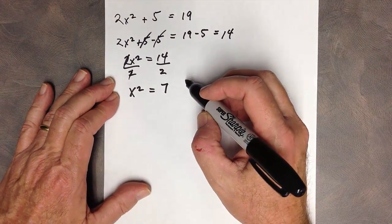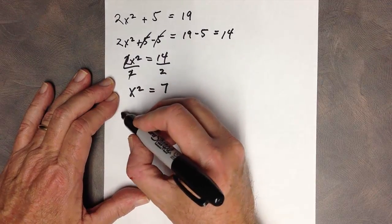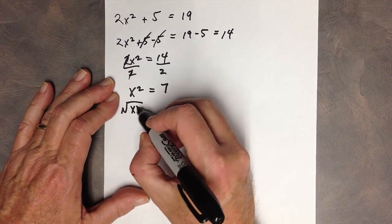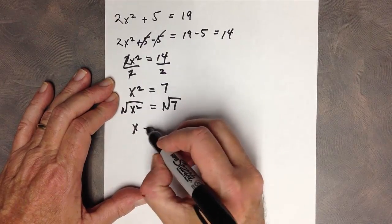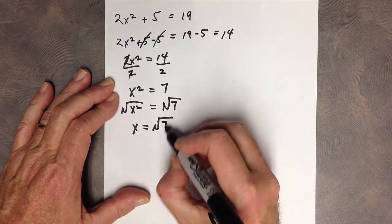So, if I then take the square root of both sides of the equation, x is going to be equal to the square root of 7.